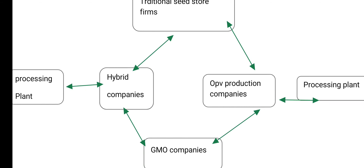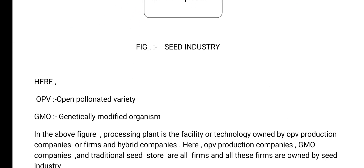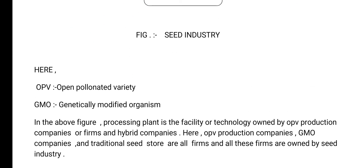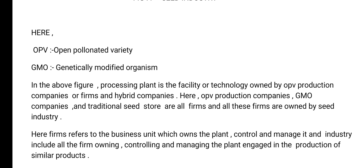OPV production companies are also directly related to the processing plant. Here OPV means Open Pollinated Variety and GMO means Genetically Modified Organism. In the figure, the processing plant is a facility or technology owned by OPV production companies or firms and hybrid companies.